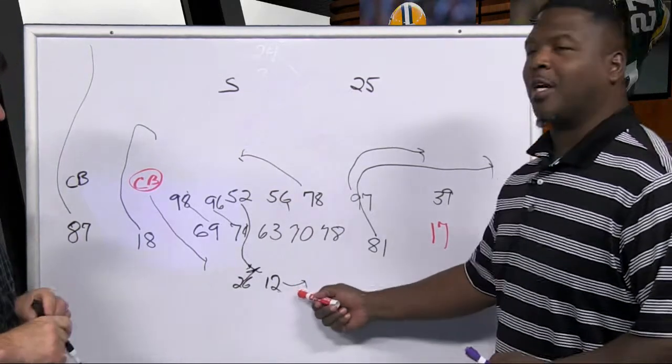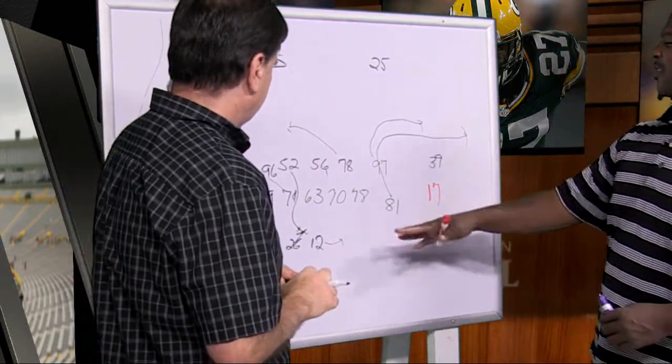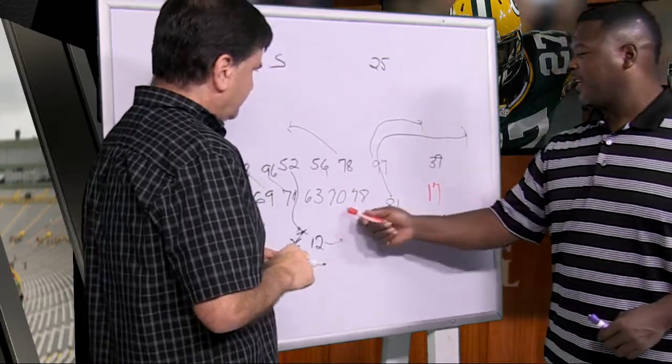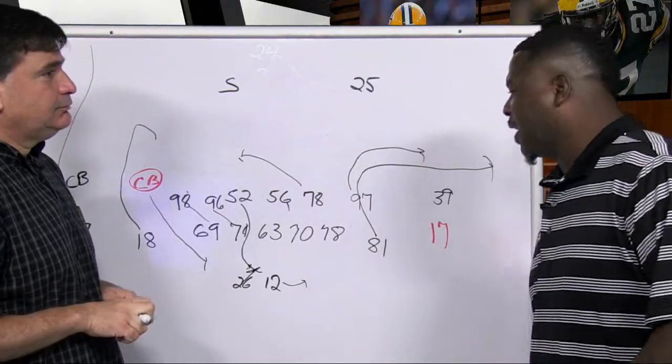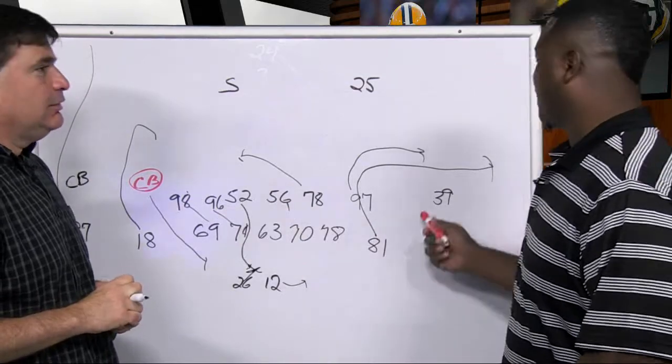Well, the first thing Aaron tries to do with his receivers on the front side—the front side is his favorite side—he gives Davante kind of a touch on his knee, saying, listen, if you get a six-man pressure, cut this route off.